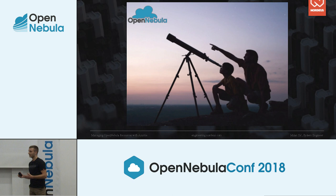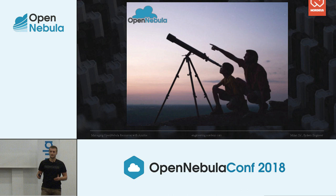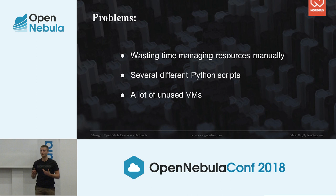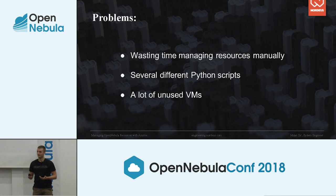They started creating their personal test instances using the OpenNebula web interface. After a certain time, some developers started writing custom Python scripts to automate virtual machine and service deployment. Eventually, every team had their own custom Python script and their own way of automation. As you can see, it's pretty easy to create a virtual machine, but after a while there are a lot of unused virtual machines around, and someone has to terminate them periodically.